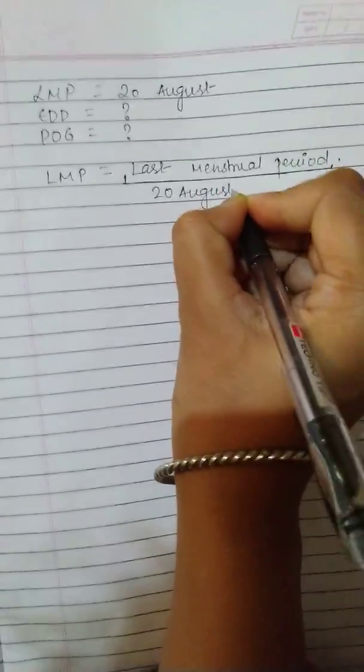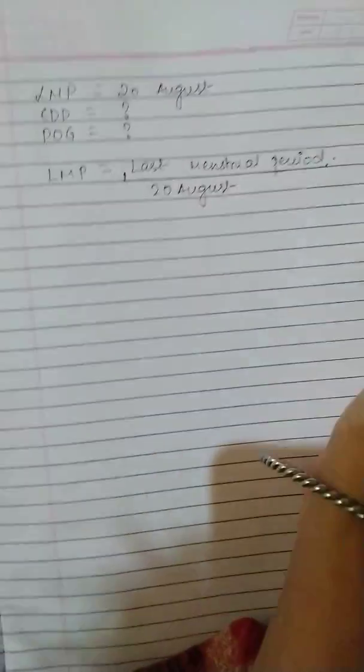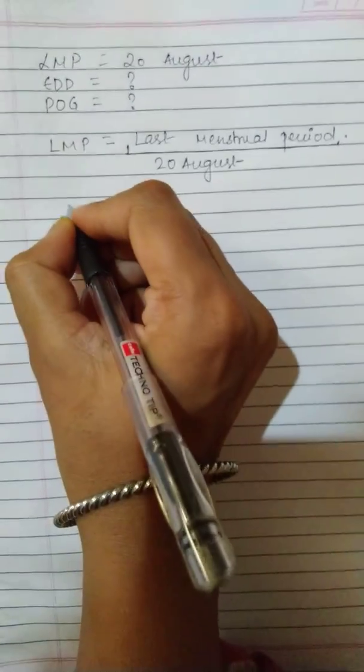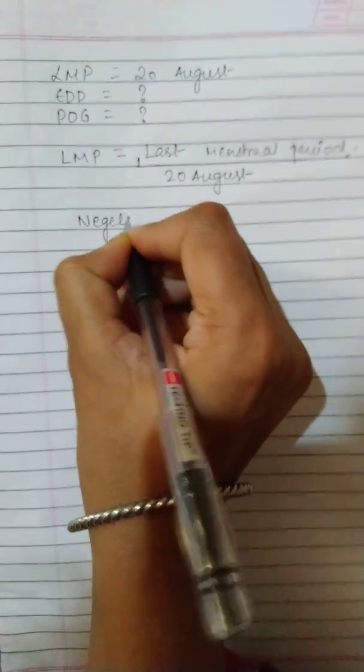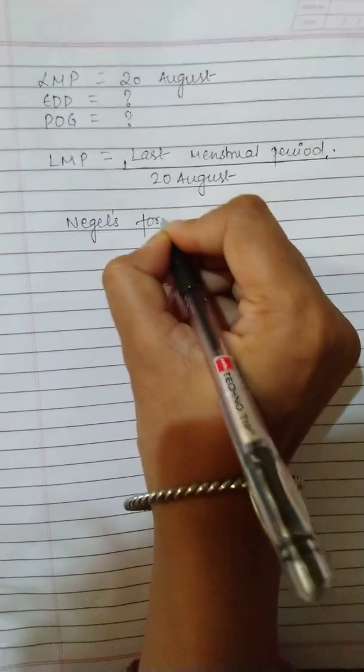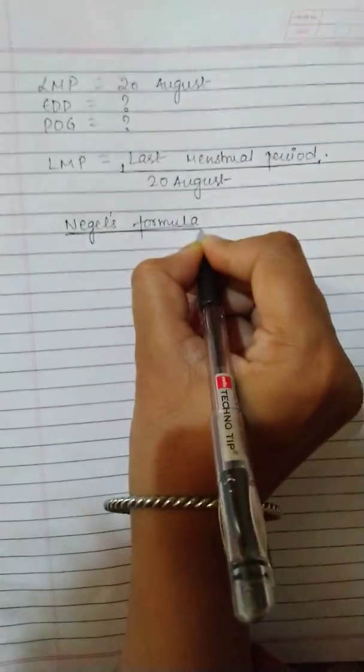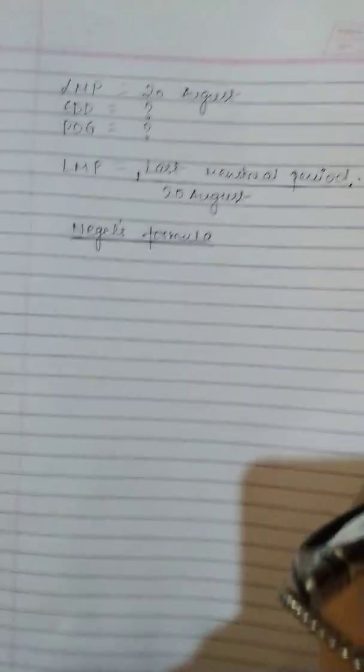So suppose she is telling that I have got my period on 20th of August. So we'll be taking this day and we'll calculate the LMP. So the formula that is applied to calculate the LMP is known as Nigel's formula. This question can also carry few marks like they will ask what is the formula.